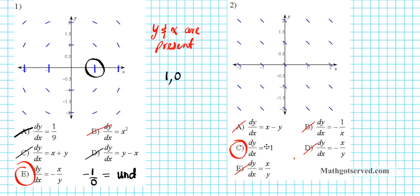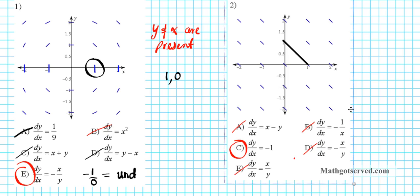Does this answer make sense? This answer tells us the tangent line will always have a steepness of negative 1 everywhere in the slope field. Looking at any line here, dropping 1 and running 1 gives a slope of negative 1. That's the slope of all the tangent lines in our slope field. So our answer is confirmed as option C.